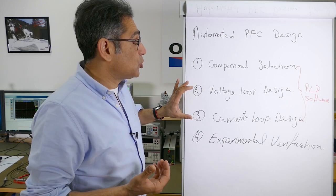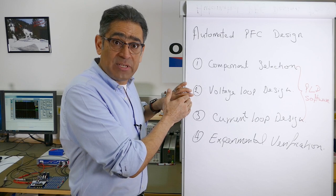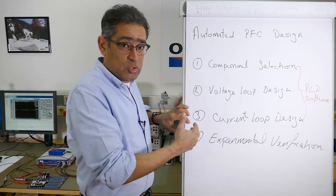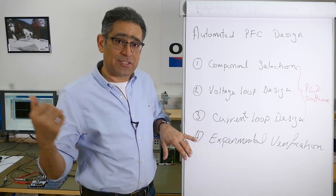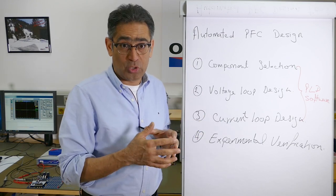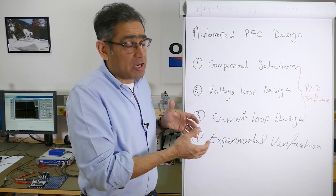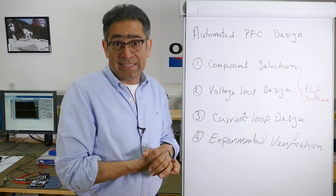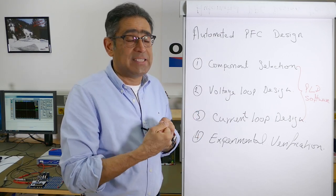A PFC, typically the most popular one, has got two loops: an outer voltage loop which is usually slow, and a current loop inside the voltage loop which is much faster. Finally, we're going to go to the test rig and show you experimental verification on the same board we use in our workshops to prove that what we've done is working. To ease the design, we've developed a software called PLD that takes care of all of this and makes the process much easier.